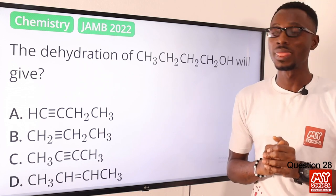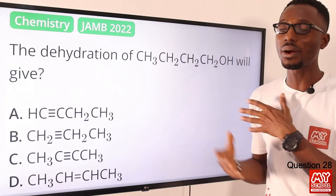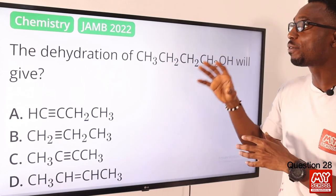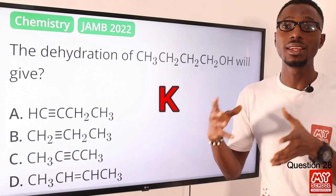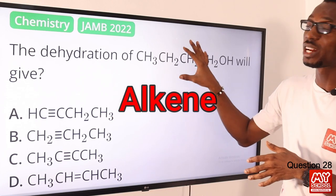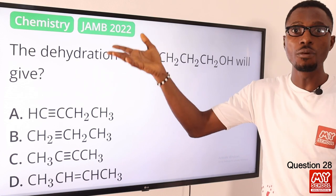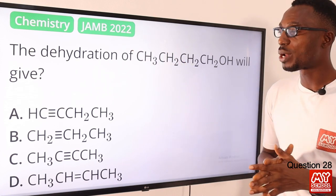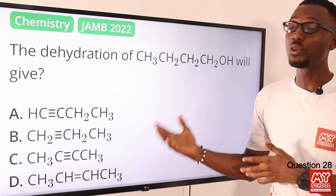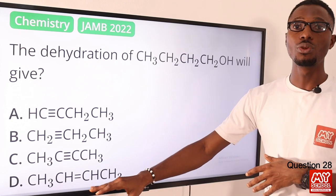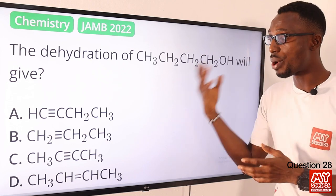Question 28. The dehydration of this particular compound — this is an alkanol, this is an alcohol. If you dehydrate alcohol, what you are going to get is your alkene (A-L-K-E-N-E). This is actually done with excess H₂SO₄ at a high temperature, somewhat around above 170°C. So what you are going to get at the end of the day is an alkene, and that is what we have right here — a double bond. So the correct option is option D.